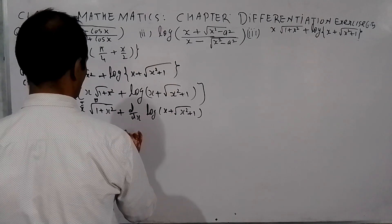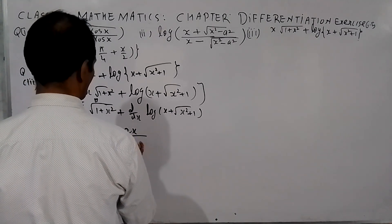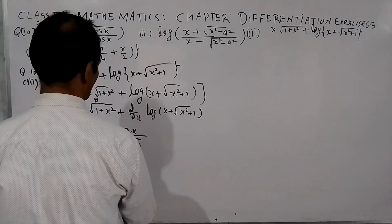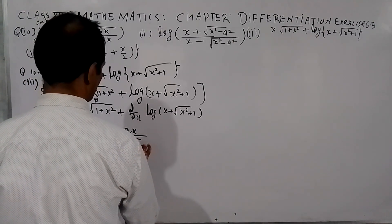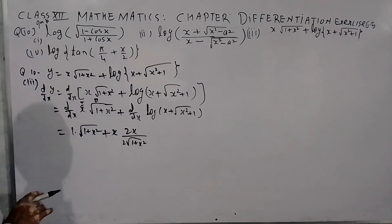The derivative of the second function term gives 2x upon root 1 plus x square. So, 1 plus x square is 1 plus x square.